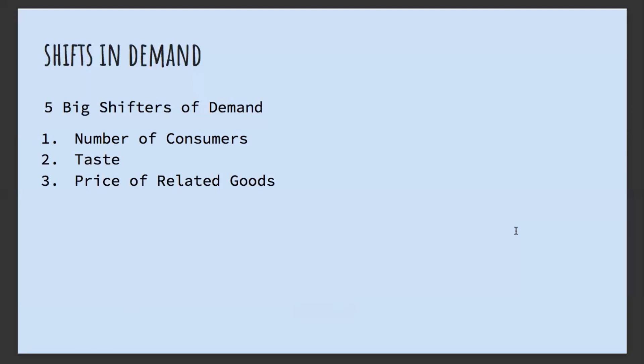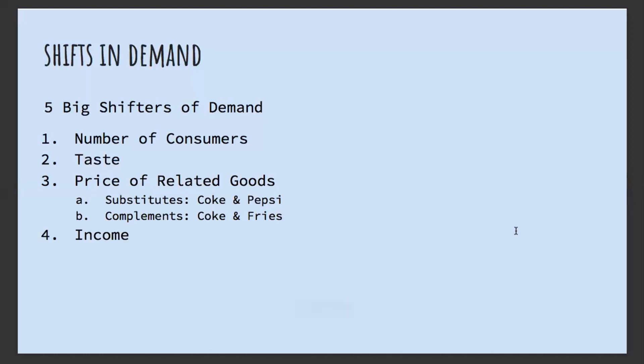Another shifter is the price of related goods. There are two types: substitutes and complements. For substitutes — for example, Coke and Pepsi — if the price of Coke increases, the quantity demanded of Pepsi will increase because people will buy less Coke and more Pepsi. For complements — say Coke and fries — if the price of Coke decreases, the quantity demanded of fries will increase, because if you only drink Coke when eating fries, buying more Coke means wanting more fries.